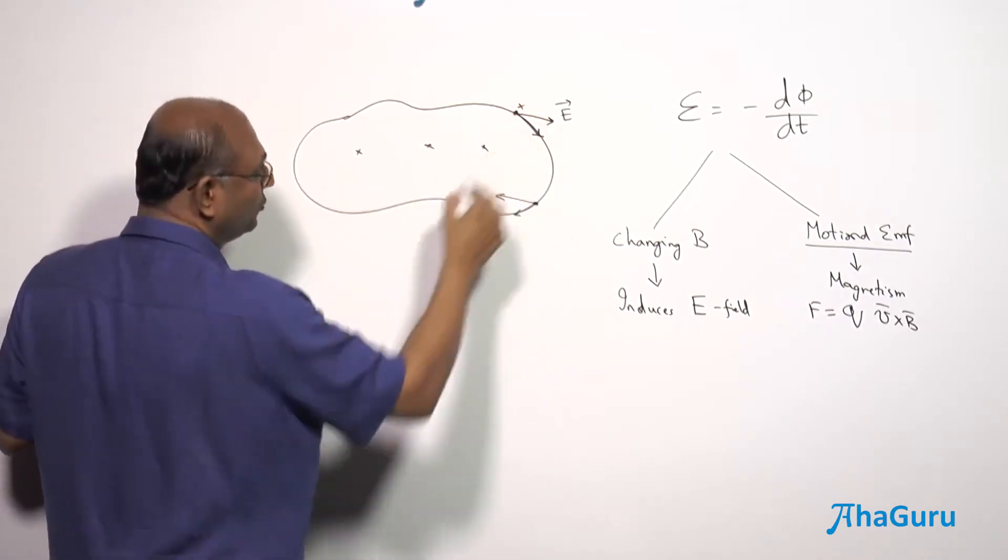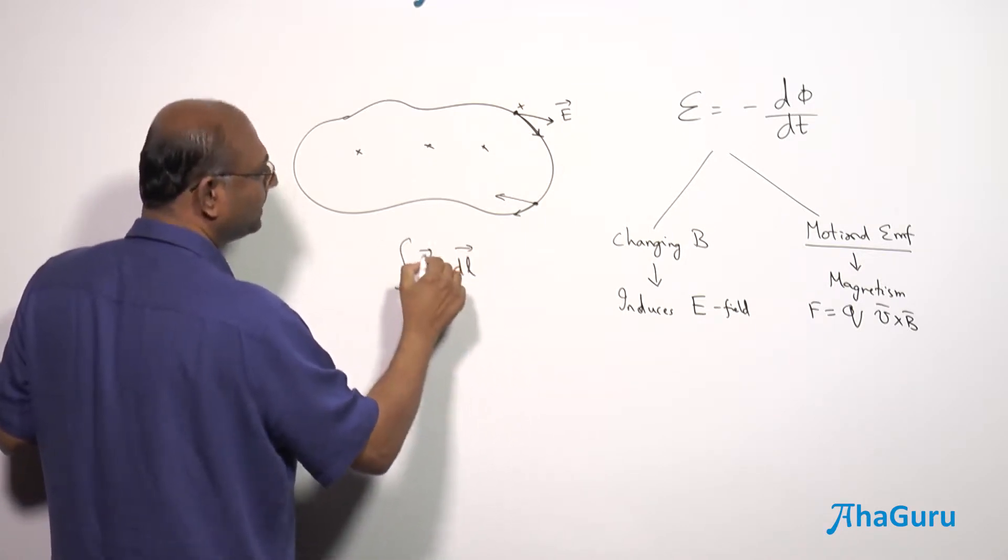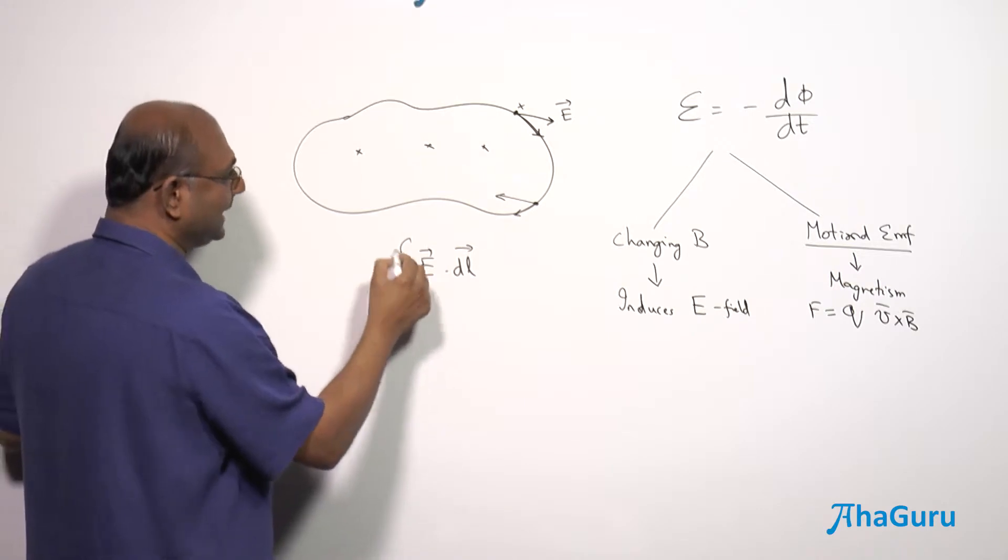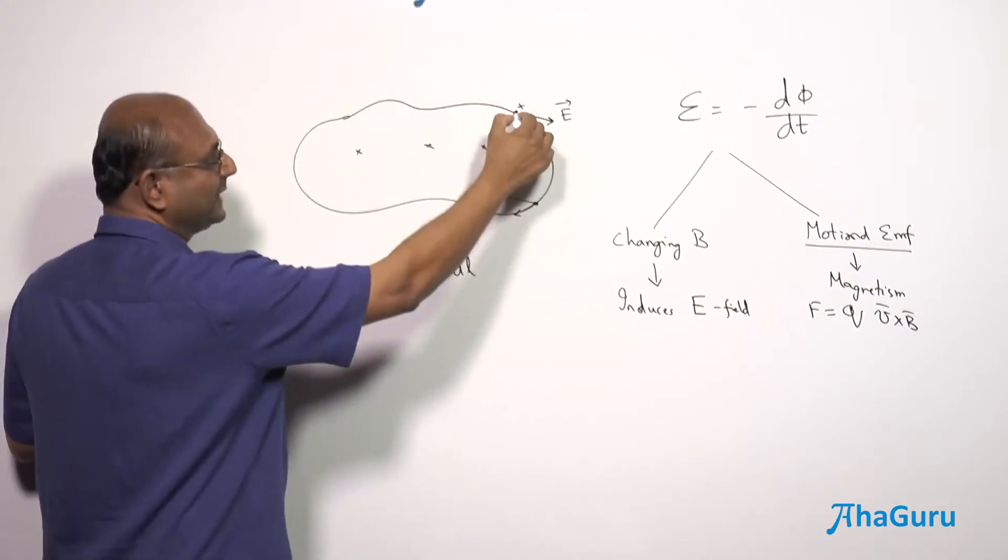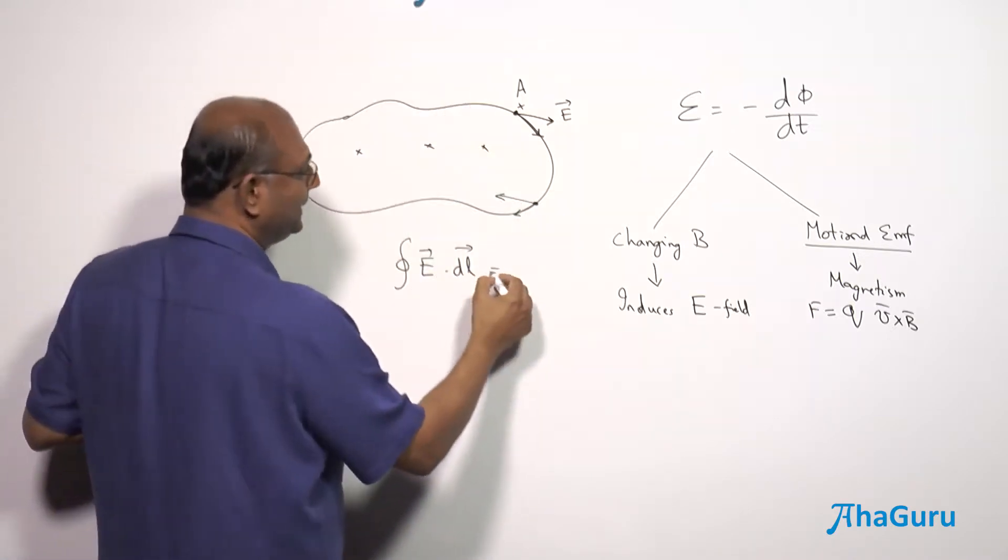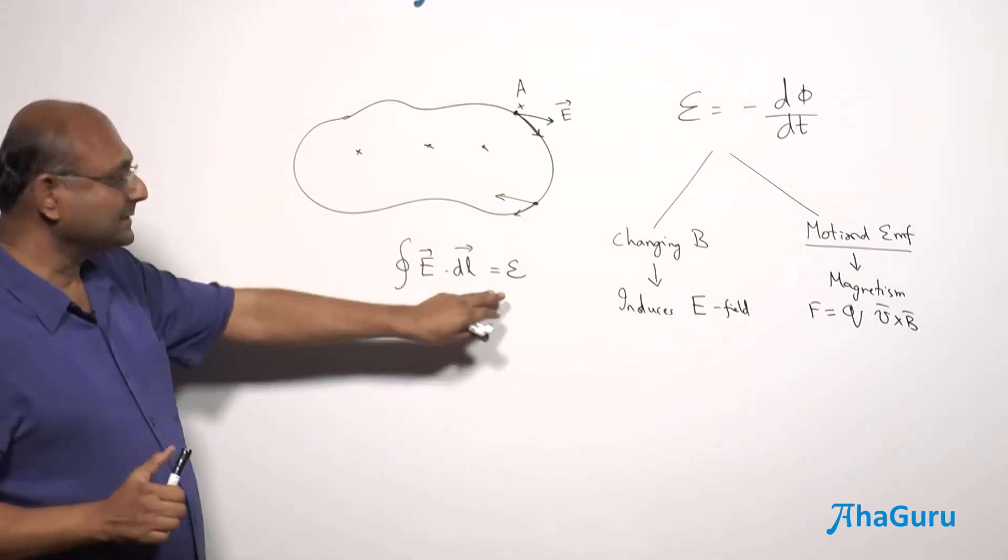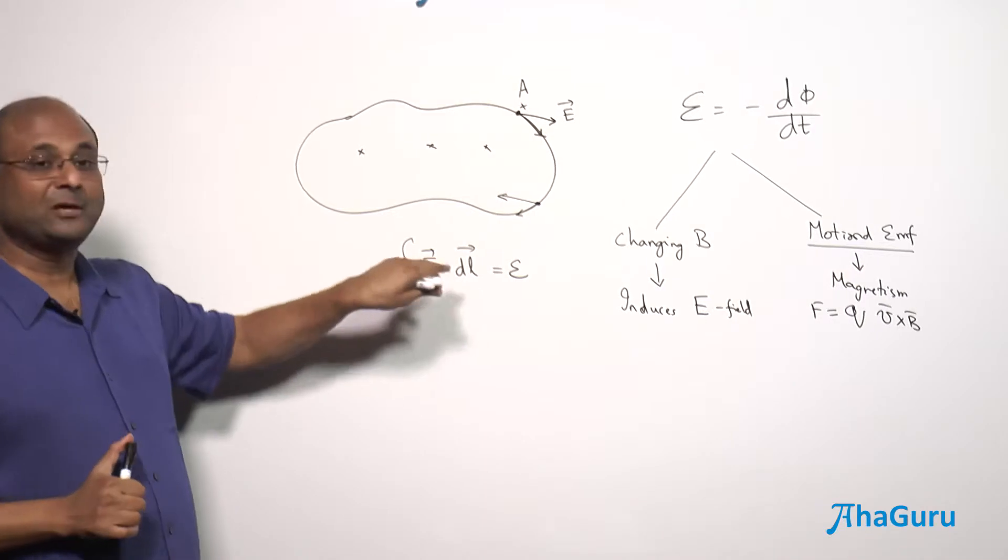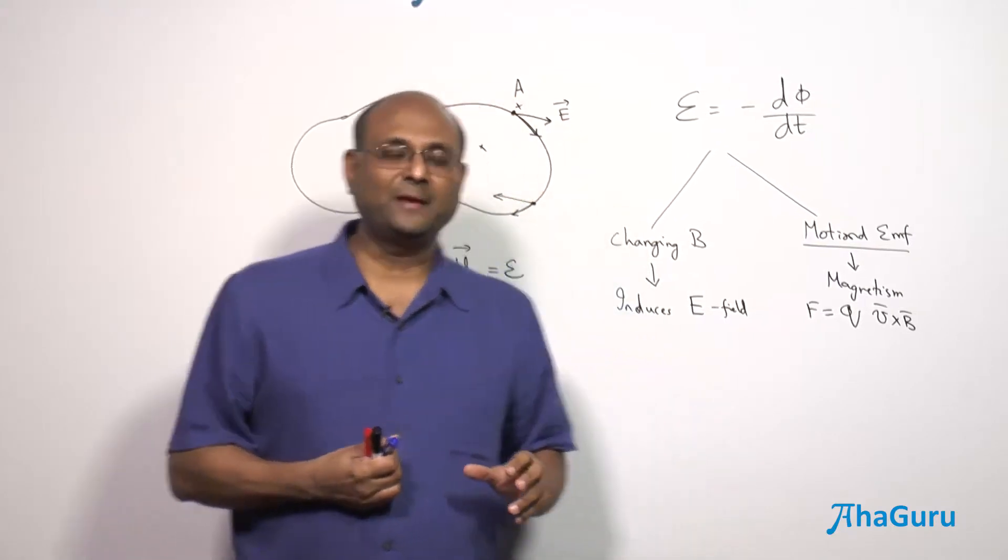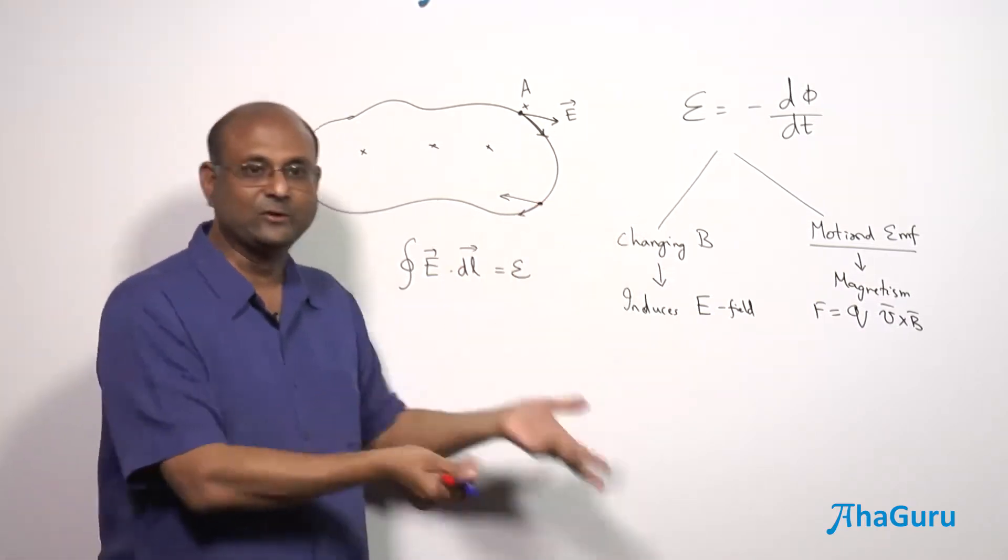Actually, if you try to do integral E dot dL, that is the work done per unit charge by this electric field through this entire closed loop. So you start at let's say point A and you go around and you come back to point A, that will be the EMF. So the mechanism is you have this EMF because there is an induced electric field. So magnetic fields changing, changing magnetic fields produce an induced electric field, produce an electric field, induces an electric field. So this is a new kind of field.